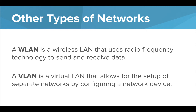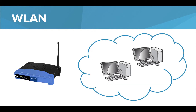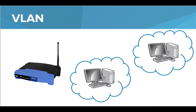Two new networks expand on the LAN, since we now have a few options when setting up a network. A WLAN is a wireless LAN and uses radio frequency to send and receive data. A VLAN is a virtual LAN, which can be wireless as well, but adds the ability to set up and organize separate networks. In a WLAN, anyone connected to the network uses the same network and the same settings. A VLAN allows for separate networks to be created, and each network can have different settings. You'll need a special router or a managed switch device for this to be possible.